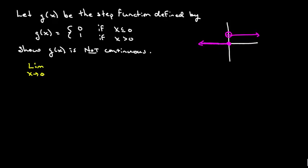what you need to do is you need to show that the limit as x approaches zero from the left of f of x is not equal to the limit as x approaches zero from the right of the function.